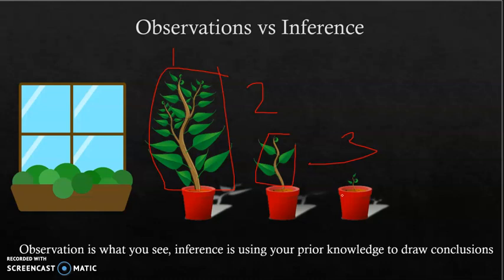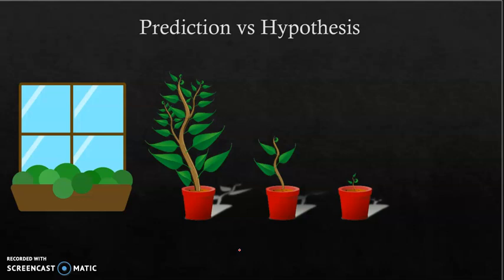An inference is when you use prior knowledge to draw conclusions. Looking at this, my observation is that tree number one is taller. My inference is that maybe it's because it's closer to the light. Inferences are when you make guesses based on what you already know to come to some conclusions. These inferences are what you're going to turn into your experimental design — your prediction and your hypothesis.